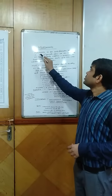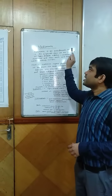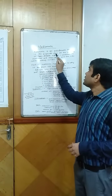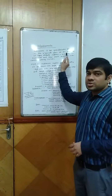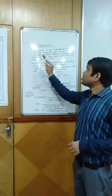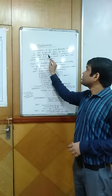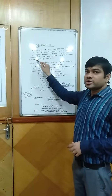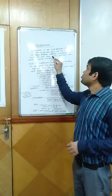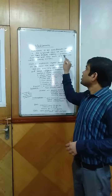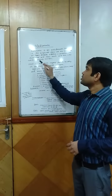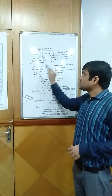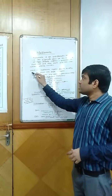We all know that Metformin is an anti-diabetic drug in the biguanide class for the treatment of type 2 diabetes mellitus, in particular in overweight and obese people and those with normal kidney function.